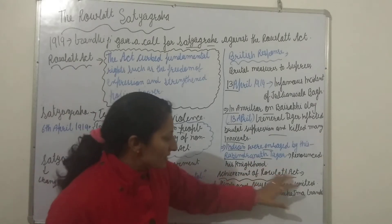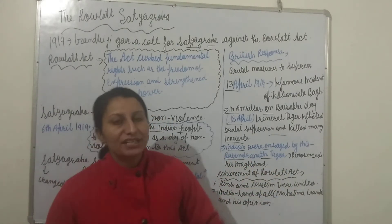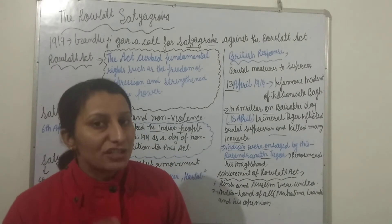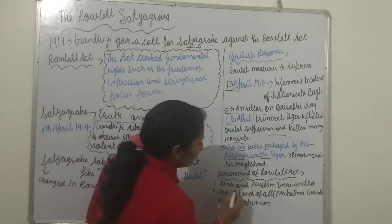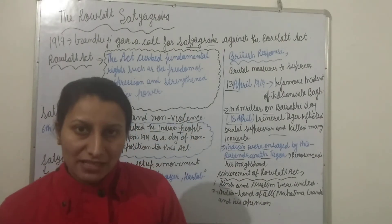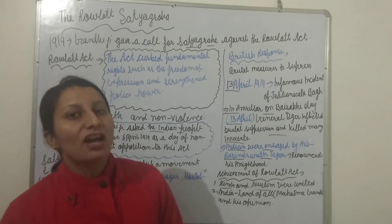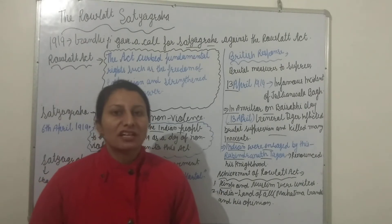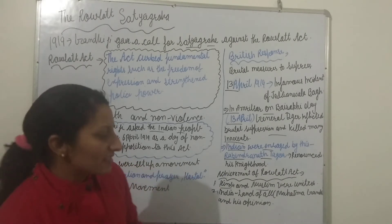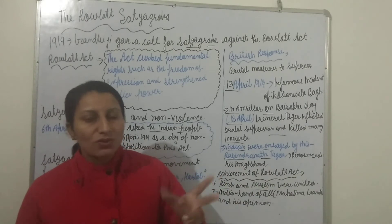Another significant outcome of the Rowlatt Act movement was that Hindus and Muslims became united against British rule. Previously, the British had tried to create separate elections and divisions — as seen in the partition of Bengal in 1905 — to divide Hindus and Muslims. But now, the Rowlatt Act brought them together.